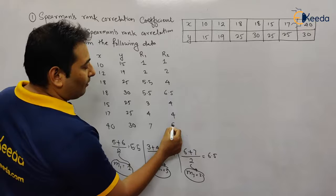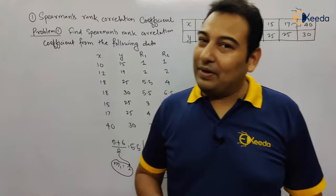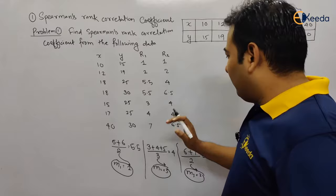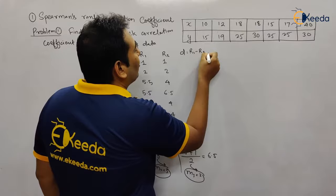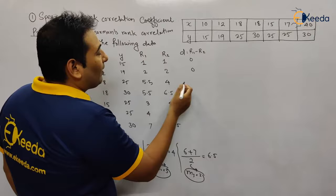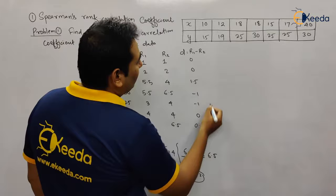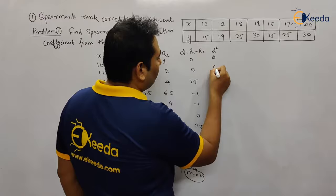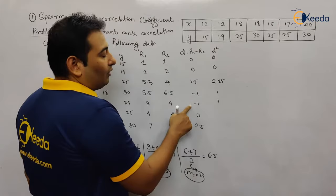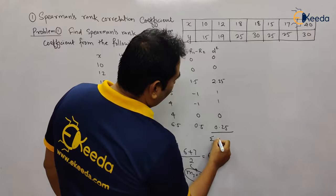Now we calculate d = R1 minus R2 for each pair: 1−1=0, 2−2=0, 5.5−4=1.5, 3−4=−1, 4−4=0, 5.5−4=1.5, 7−6.5=0.5. Then d² gives: 0, 0, 2.25, 1, 0, 2.25, 0.25. Summing these, the summation of d² equals 4.5.